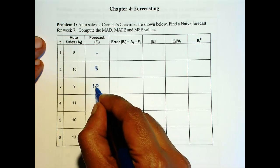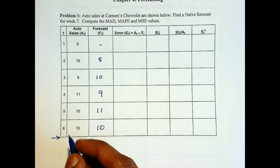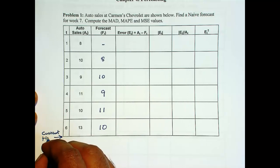So remember, we are at this point. So that's our current time. So F sub 7 is 13. Forecast for period number 7.